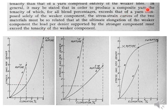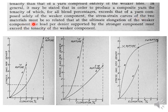In conclusion, in general it may be stated that in order to produce a composite yarn — that is, a blended yarn — whose tenacity for all blend percentages exceeds that of a yarn composed solely of the weaker component, the stress-strain curves of the two materials must be so related that at the ultimate elongation of the weaker component, the load per denier supported by the stronger component must exceed the tenacity of the weaker component.